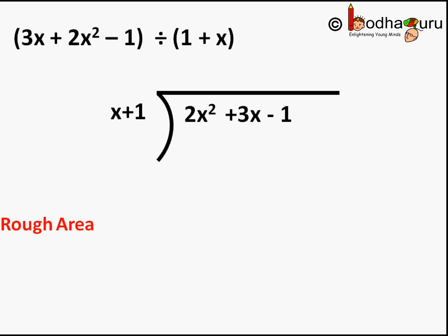First we have to write them properly. Arrange the terms in the descending order of degree. So it should be 2x² + 3x - 1 divided by x + 1. Now put the division bracket and the line. Write the dividend 2x² + 3x - 1 inside the bracket and the divisor x + 1 on the left side of the bracket.